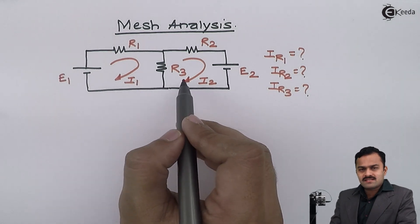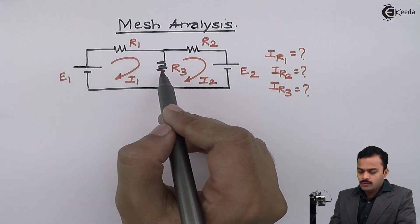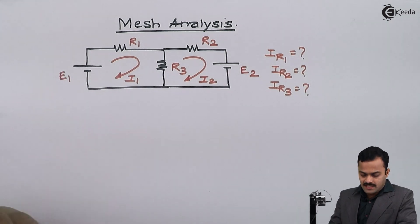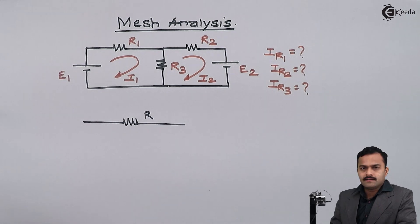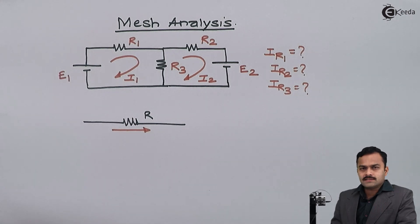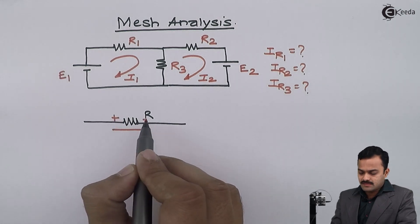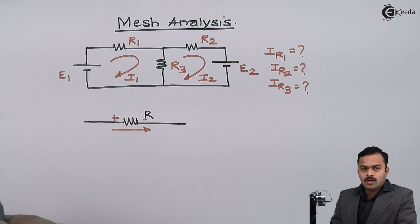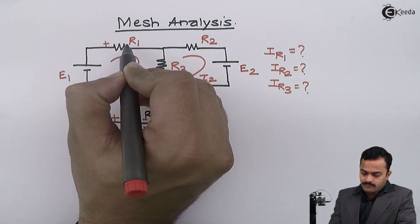Based on this direction of current, I am going to mark the voltage drops developed across all the resistances. The concept is that whenever current I is flowing through a resistance in a given direction, the voltage drop developed across the resistance will be in the direction of current — marked as plus to minus — and that is considered a drop. So let's mark all the voltage drops for these three resistances in the direction of current, and I will get this polarity.